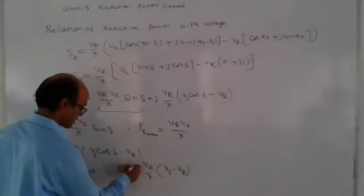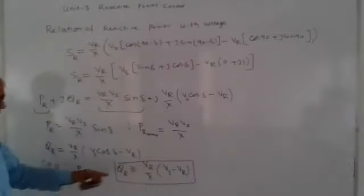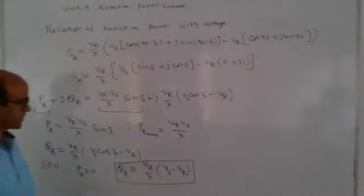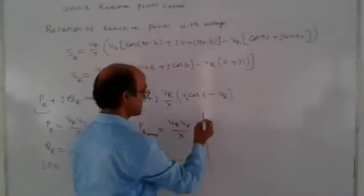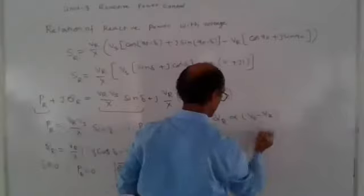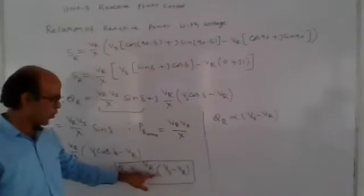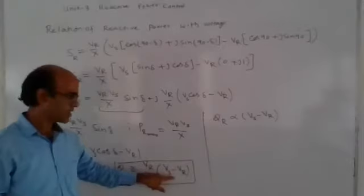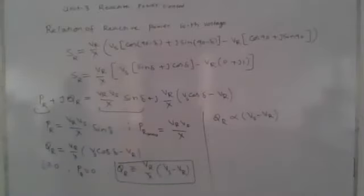So this is the approximate QR. From this expression, VS minus VR represents the change in voltage — the voltage deviation. If VR is held constant, reactive power is directly proportional to VS minus VR, because X is fixed for the transmission line. So by changing voltage, we can control reactive power.